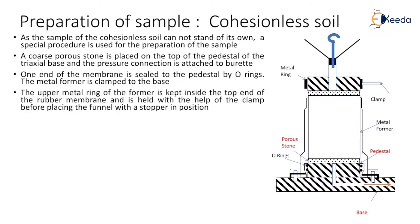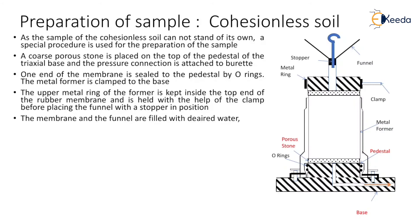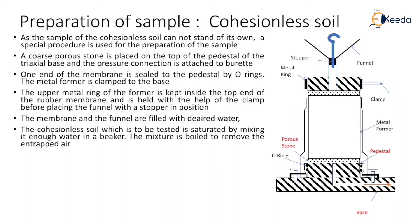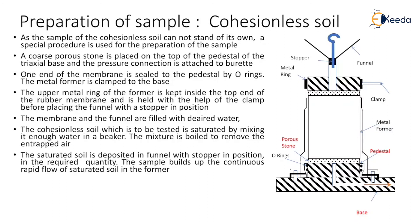There is a clamp, a funnel, and a stopper so that we can control the quantity of sand required inside the metal former. The membrane and the funnel are filled with de-aired water. The cohesionless soil to be tested is saturated by mixing it with enough water in a beaker. The mixture is boiled to remove the entrapped air. The saturated soil is deposited in the funnel with a stopper in position in the required quantity, building up a continuous rapid flow into the former.